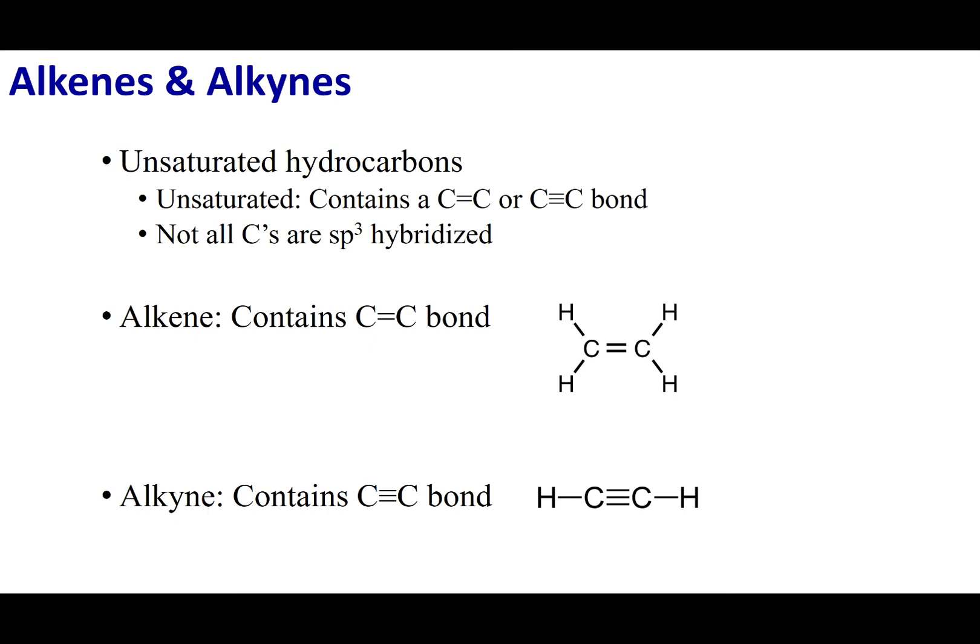Alkenes and alkynes are what we consider an unsaturated hydrocarbon. Hydrocarbon means that it's made out of only hydrogens and carbons, but the unsaturated part means that it contains either a double or triple bond. Once I put a double or triple bond, this is going to be the most important part to my molecule, and that's why I classify these molecules separately from alkanes.